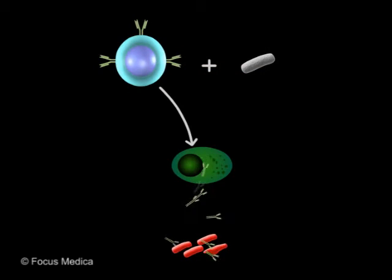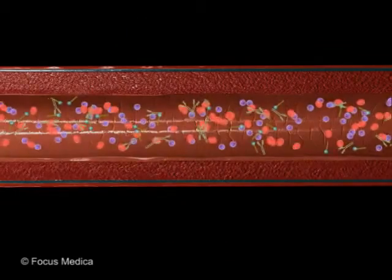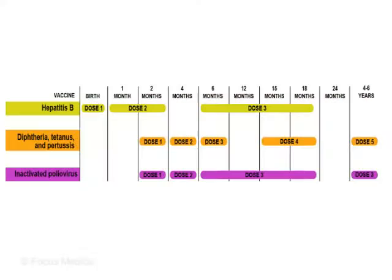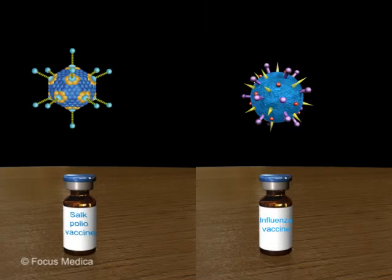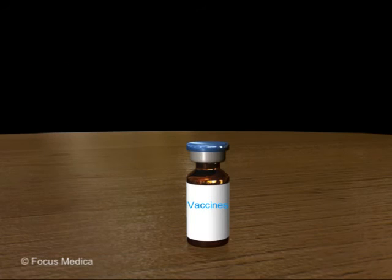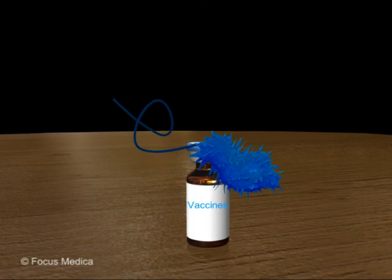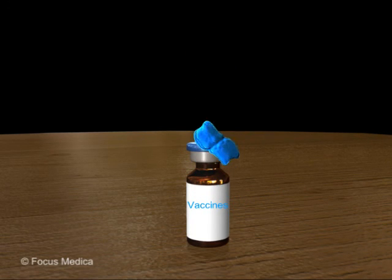Most of the immune responses by inactivated vaccines are humoral and are therefore short-lived, requiring multiple or booster doses. Addition of an adjuvant enhances immune response. Examples of inactivated viral vaccines are the Salk polio vaccine and influenza vaccine. Some of the inactivated bacterial vaccines include vaccines for cholera, typhoid, and pertussis.